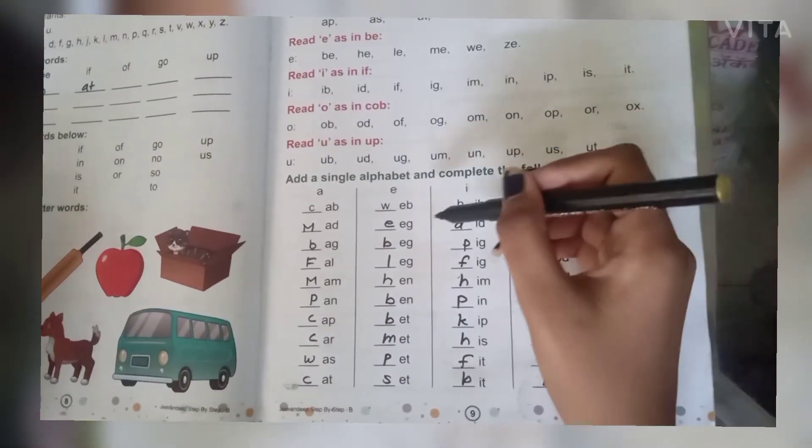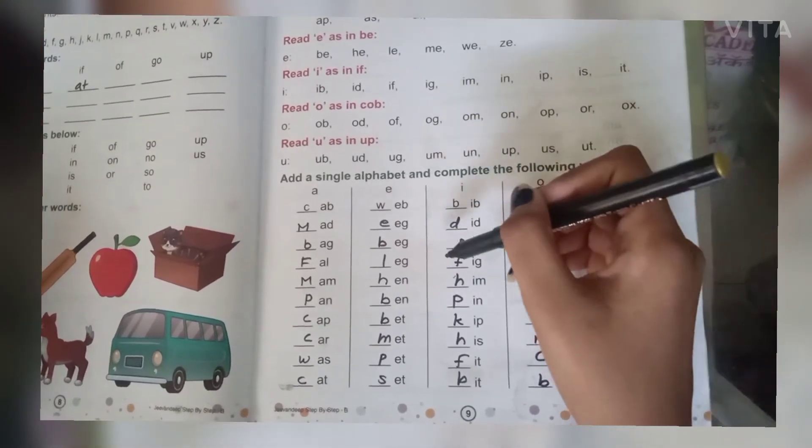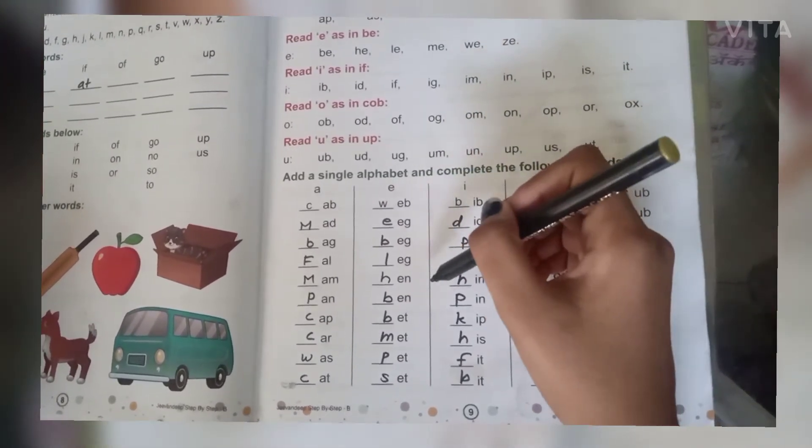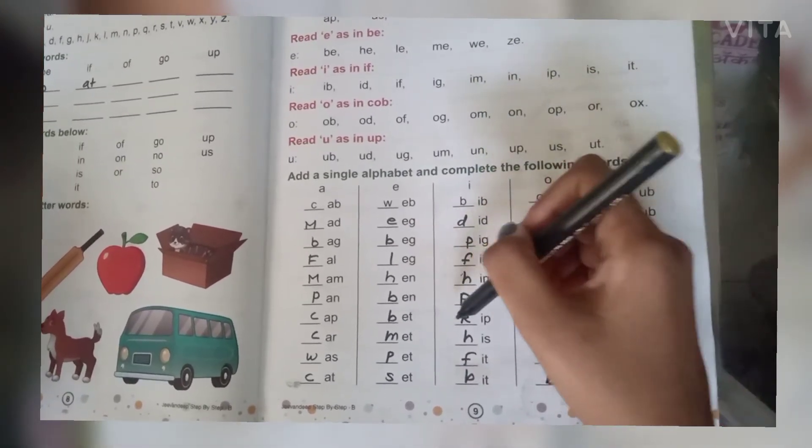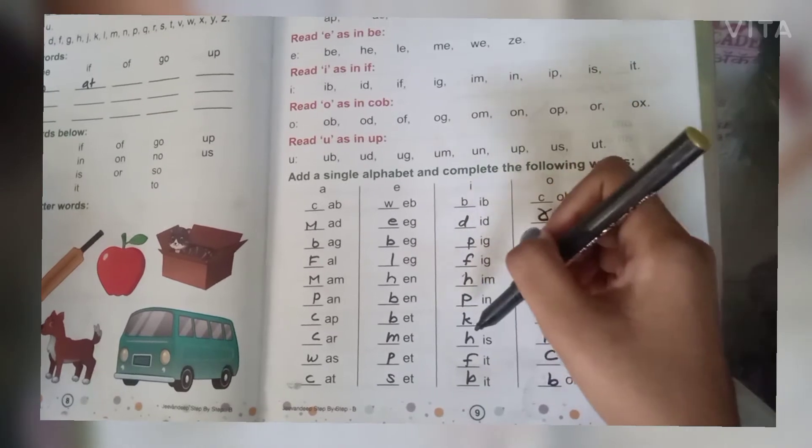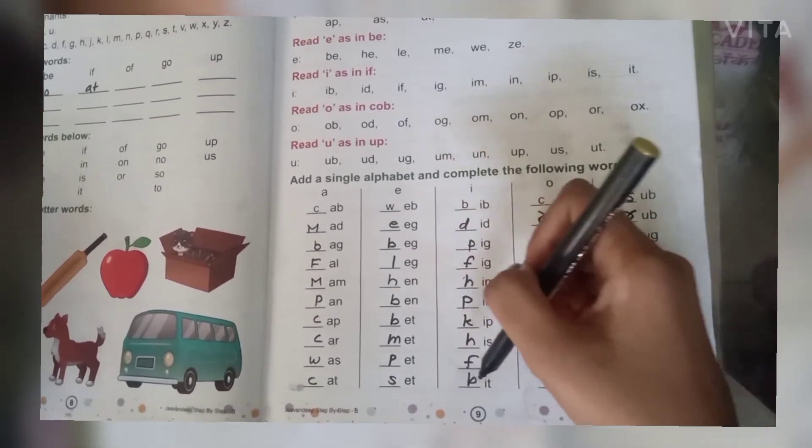B-I-B, bib. D-I-D, did. P-I-G, pig. F-I-G, fig. H-I-M, him. P-I-N, pin. K-I-P, kip. H-I-S, his. F-I-T, fit. B-I-T, bit.